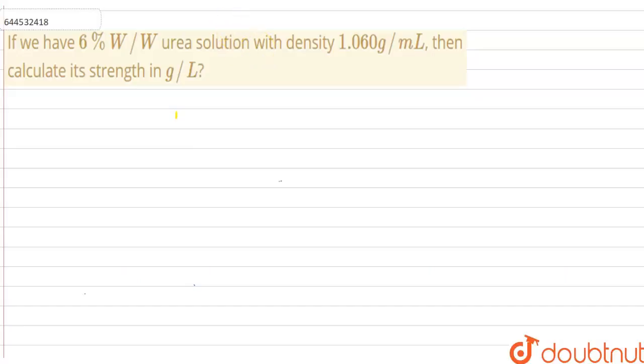Hello everyone, let's start the question. If we have 6% W/W urea solution with density 1.060 g/mL, then calculate its strength in gram per liter.